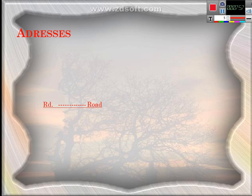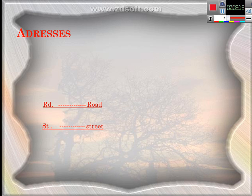The second kind of abbreviations is addresses. Who can read? R-D — abbreviation of Road. S-T — abbreviation of Street. So Rd. and St. are address abbreviations.